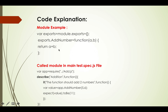For the core explanation, we first create a module for adding numbers. Suppose our module exports a function called addNumber. This function takes parameters a and b and returns a plus b. We then export this module.